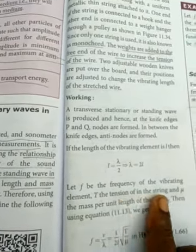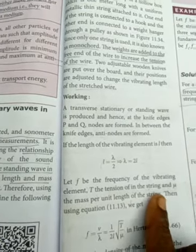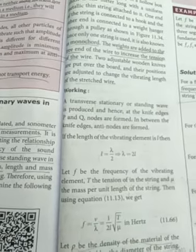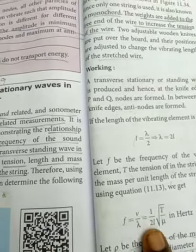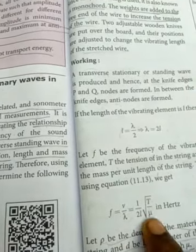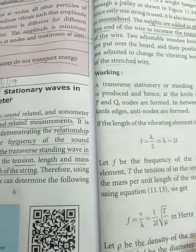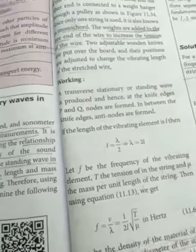Let f be the frequency of the vibrating element, T the tension of the string, and mu is a mass per unit length of the string. Then using the equation frequency f equal to V by lambda. So for V order value we know that 1 by 2L root of T by mu. So now we are finding out the mu value.